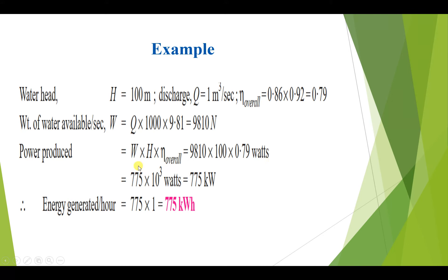We can write the power produced as 775 kilowatts. The energy generated per hour equals 775 multiplied by 1 hour, so 775 kilowatt-hours of energy is generated per hour. That is the required answer.